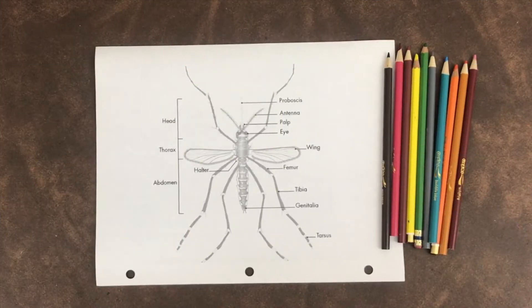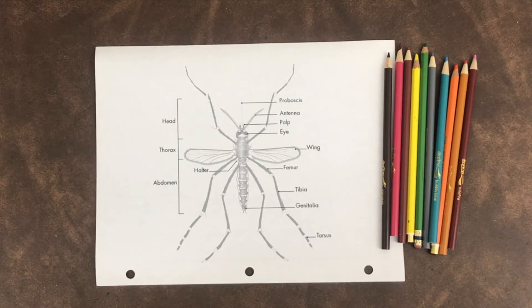Now let's do an activity together. All right little scientists, let's take out our drawings of mosquitoes. You can either use the one that I included in your activity packet this week, or you can draw your own.